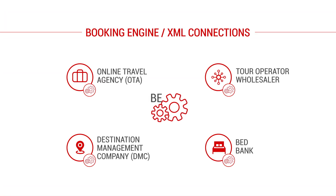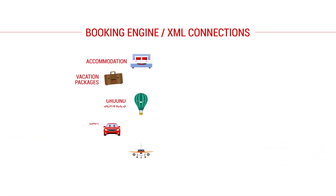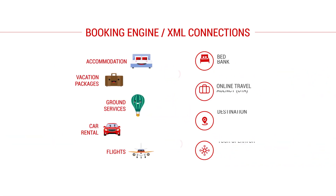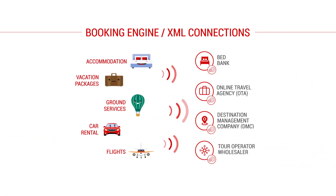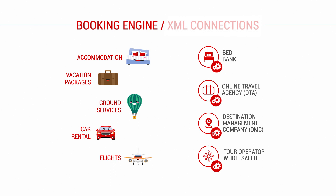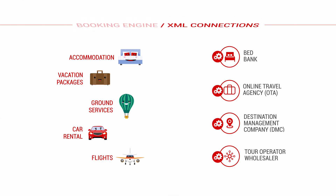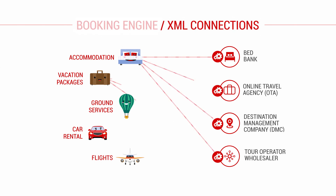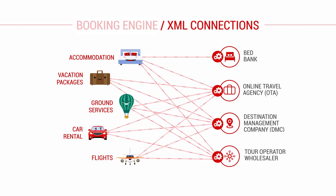Technology has revolutionized travel distribution and tourism products follow an online path that goes through a booking engine and their XML connections. The booking engine is software utilized to manage and distribute travel products online. And XML connections enable travel companies to complement their own inventory with that from external third parties, thus expanding their offer.